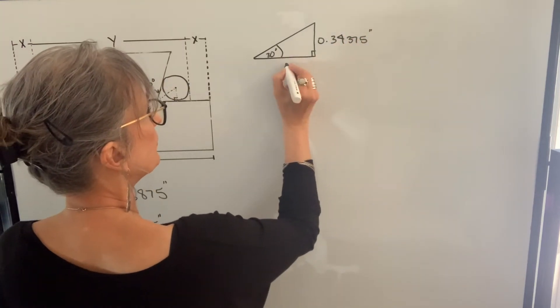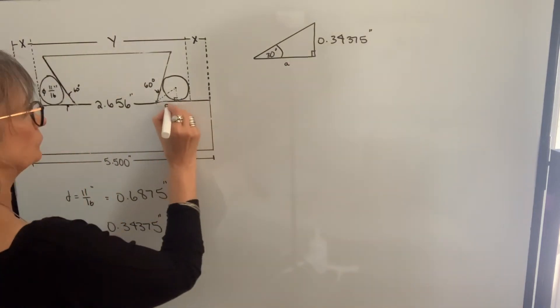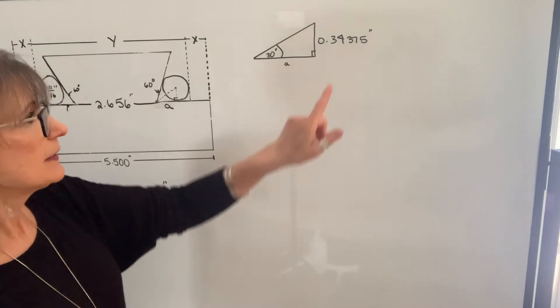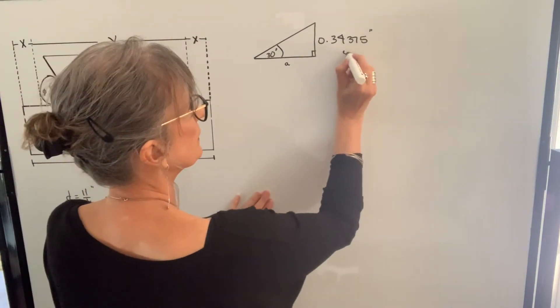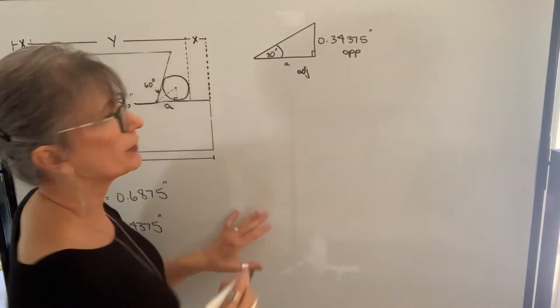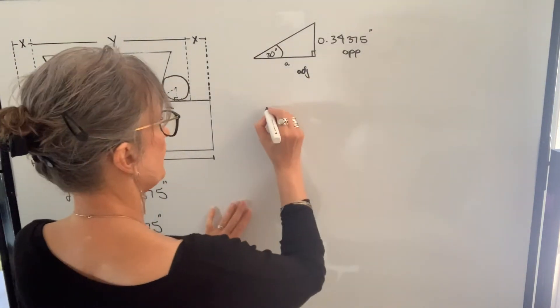What I want to find is this length. I'm going to call it A. In terms of my right triangle, this side is the opposite side. This side is the adjacent side. The trig function that uses opposite and adjacent is the tangent function.